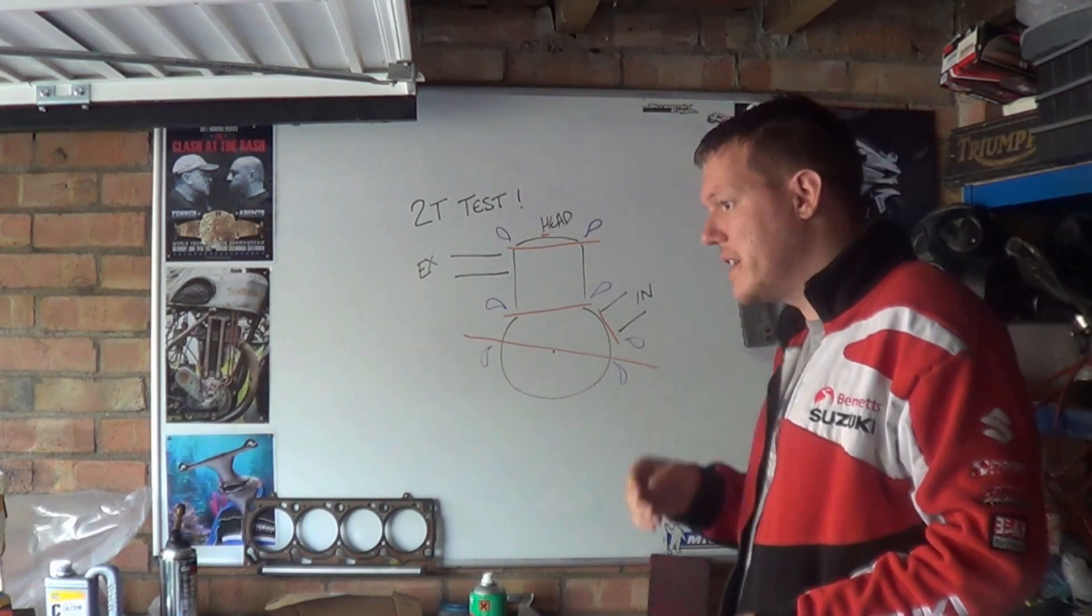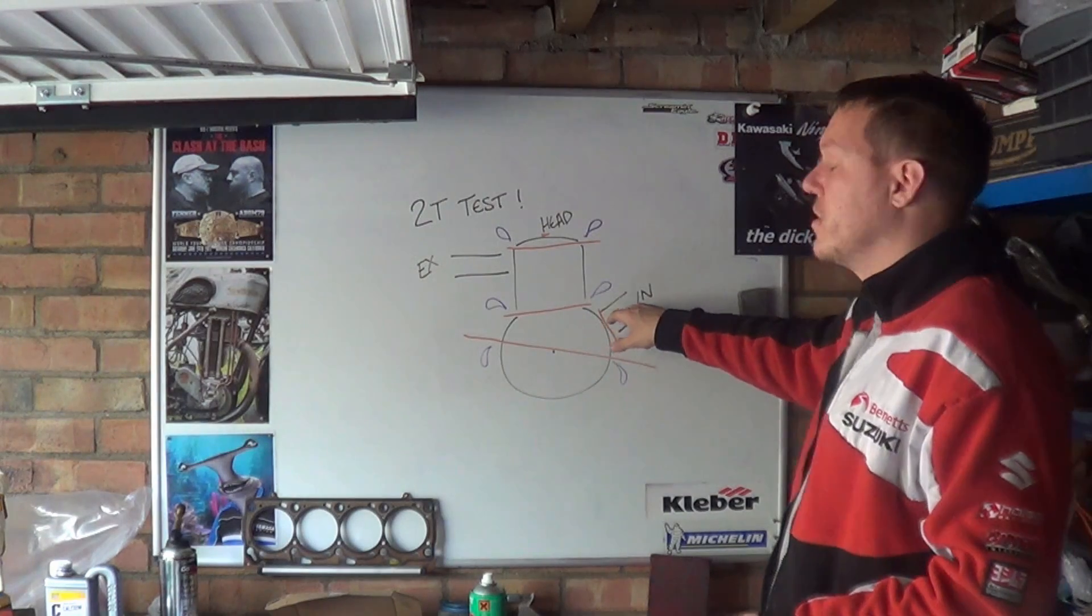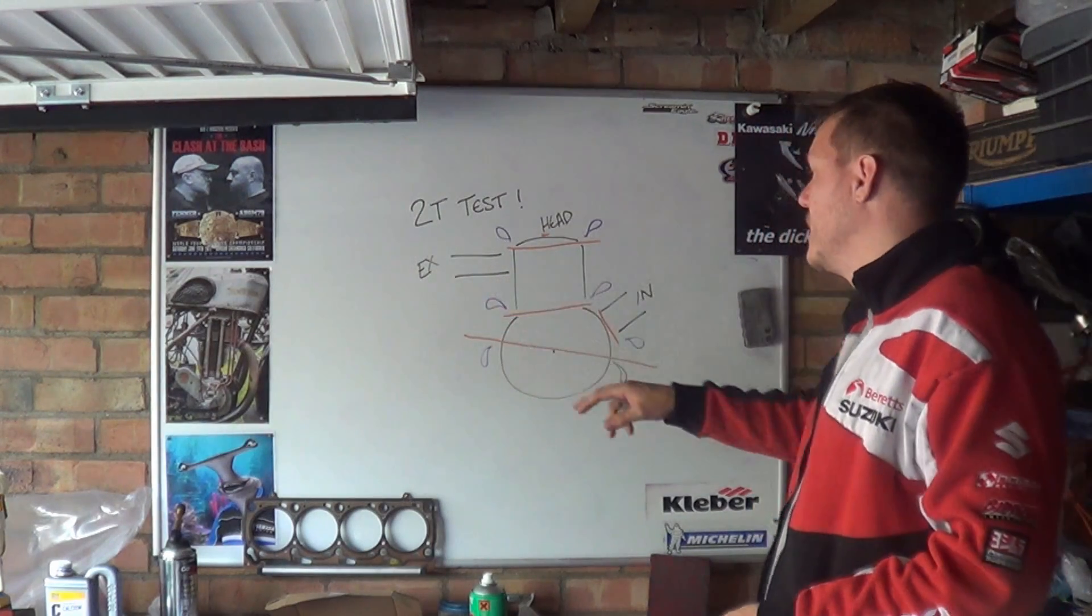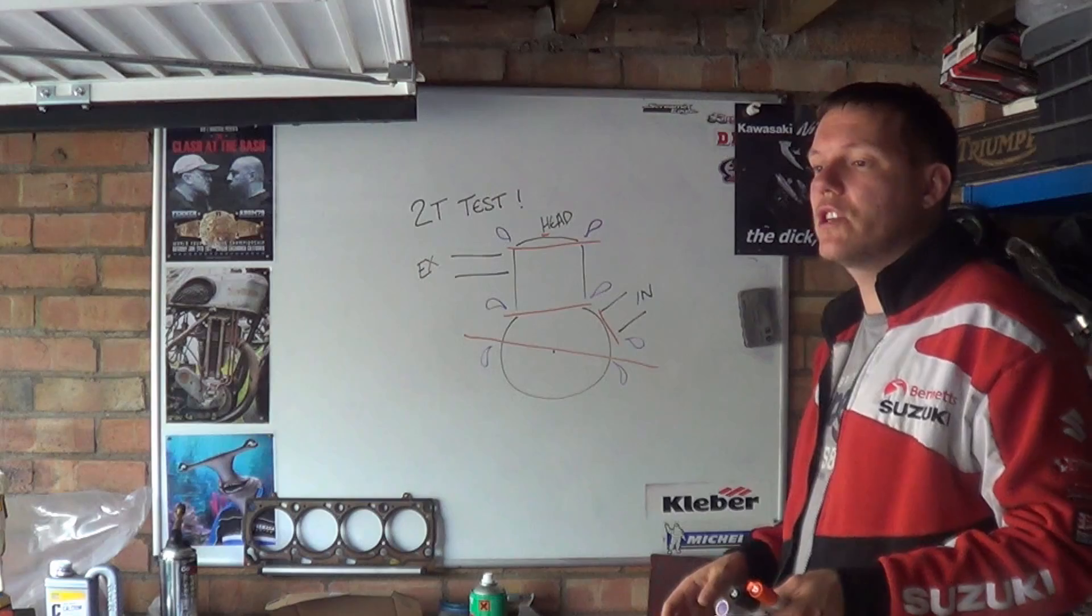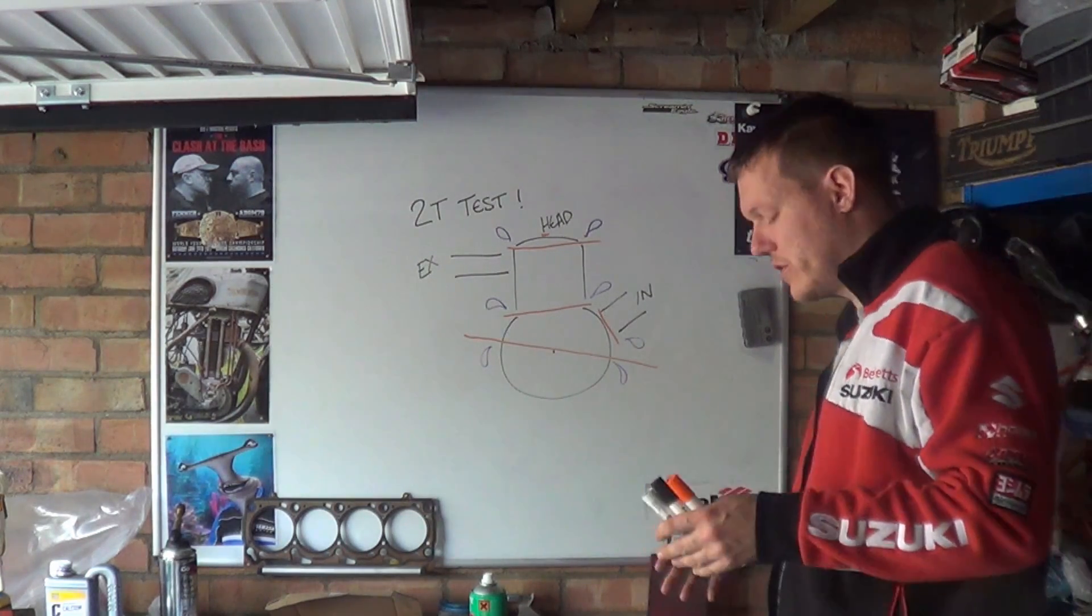It does help if you have a pressure gauge actually fitted, so you can put it on your inlet or your exhaust. It is a good idea to make sure that your piston is at the bottom of the stroke.